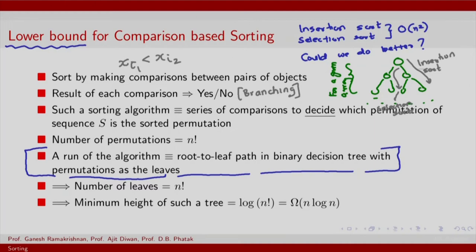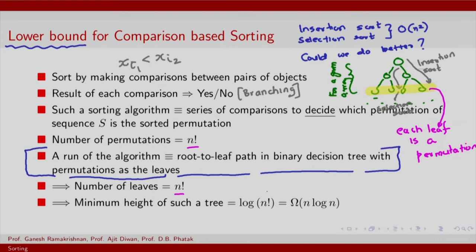What sits at each leaf of the permutation tree is the permutation itself. The number of permutations is n factorial, therefore we have n factorial leaves. Now what is the minimum height of such a tree? Since this tree is binary and complete — every pair of elements when compared has two outcomes, with no comparison leading to a dead child — you will have a complete balanced tree, and the minimum height of such a tree is log n factorial.